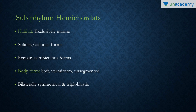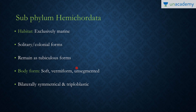Hemichordata — 'hemi' means half and 'chordate' refers to having a notochord. These are now no longer part of phylum Chordata; they are a new phylum within the non-chordates. They are exclusively marine animals and may be solitary or colonial. They have a tubular form, and the body is soft and vermiform, and it is unsegmented — that is, metameric segmentation is absent.